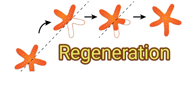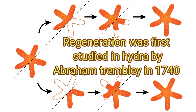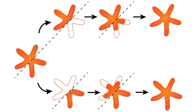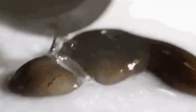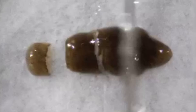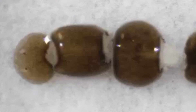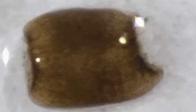Regeneration was first studied in Hydra by Abraham Tremblay in the year 1740. Regeneration is of two types: morphallaxis and epimorphosis. In morphallaxis, the whole body grows from a small fragment. Examples are Hydra and Planaria. In the planarian worm, if it is cut into two or three pieces, each fragment can grow into an entire planaria.